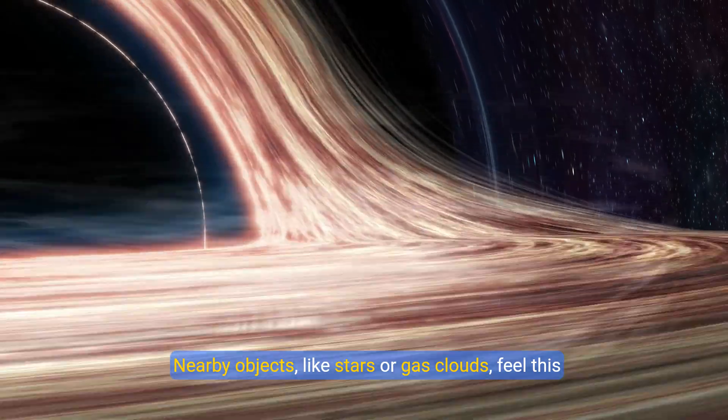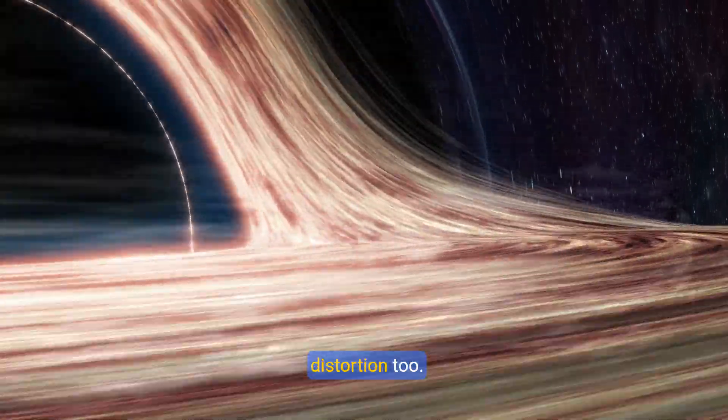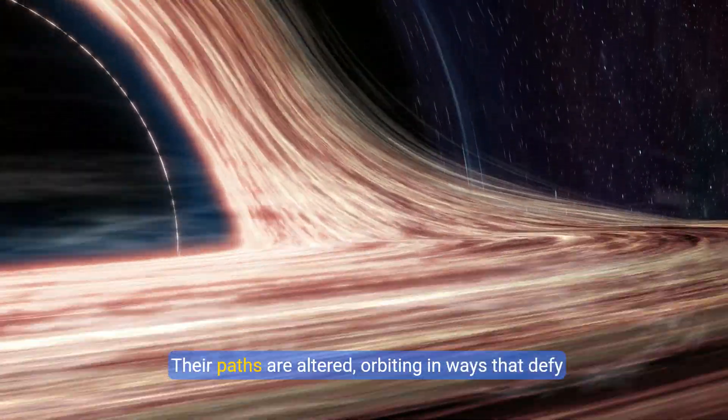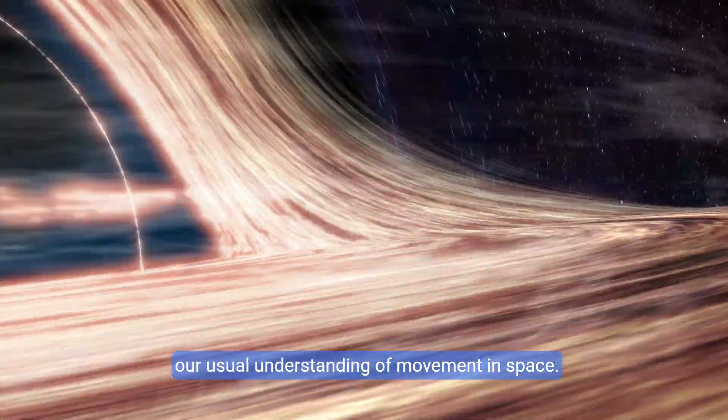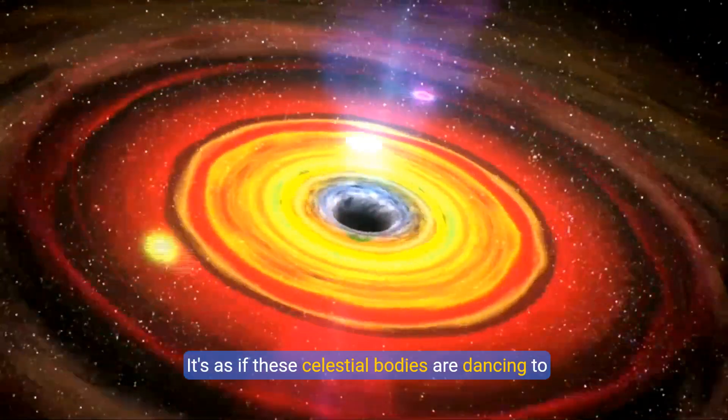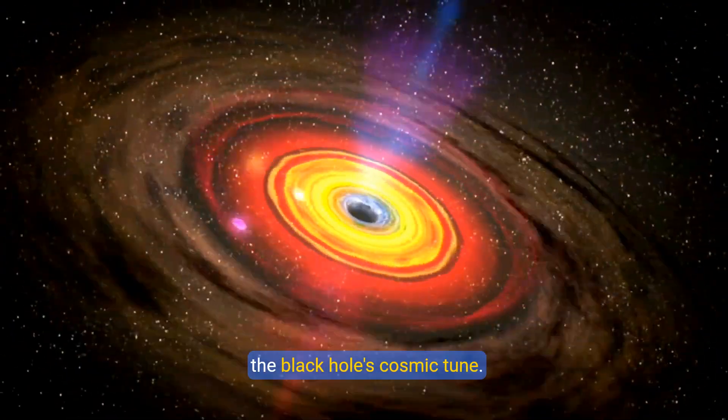Nearby objects, like stars or gas clouds, feel this distortion too. Their paths are altered, orbiting in ways that defy our usual understanding of movement in space. It's as if these celestial bodies are dancing to the black hole's cosmic tune.